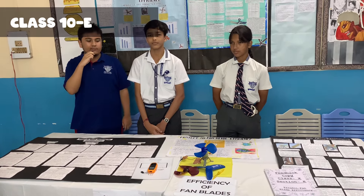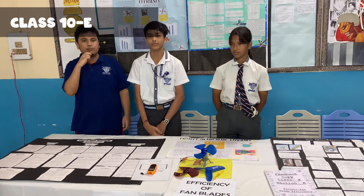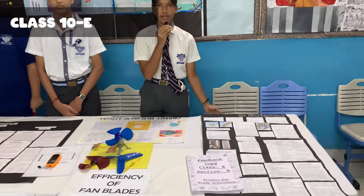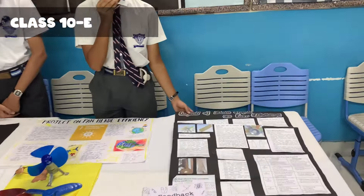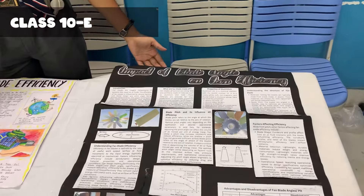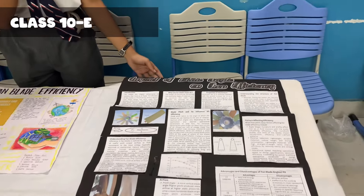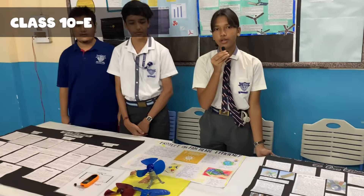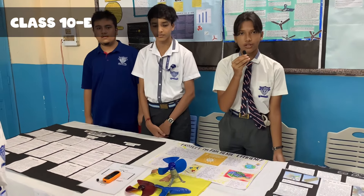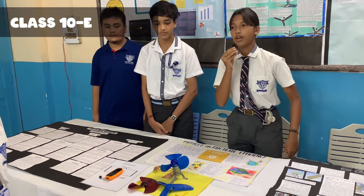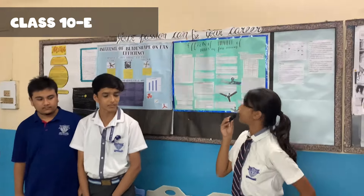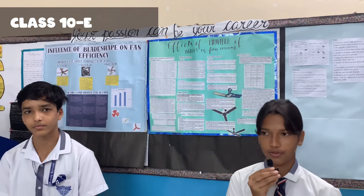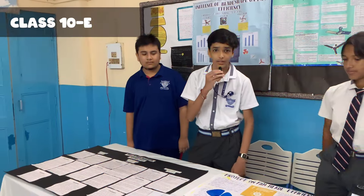We have found out which of these is the most efficient one. We have also studied different blade angles and how they help the fans function. After many experiments, we have seen that an angle of 12 to 15 degrees is the most efficient for fan blades. We have also experimented with the effects of the number of fan blades and their influence on fan efficiency.